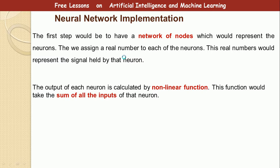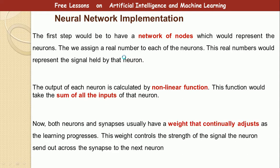So, how is a neural network implemented? The first step would be that there will be a network of nodes. These nodes represent neurons. Now, we assign a number to each of the neurons. So simply creating a graph made up of nodes and edges, and then assign a number to each of the neurons. This real number will represent the signal held by this neuron. Now, the output of each neuron is calculated by a non-linear function.